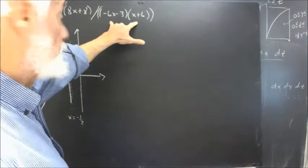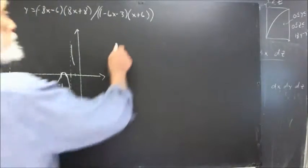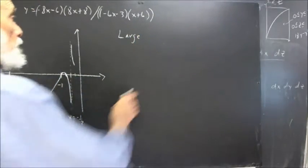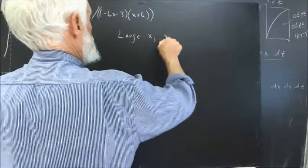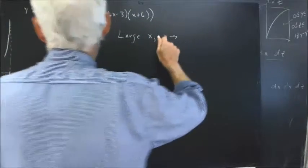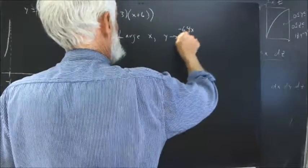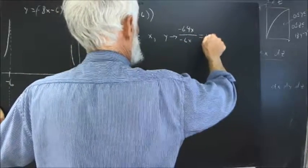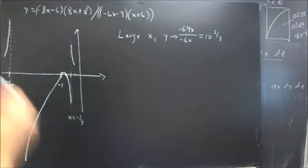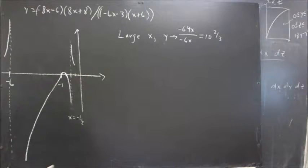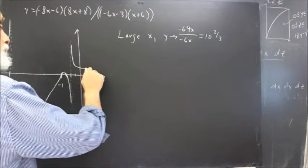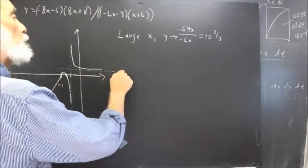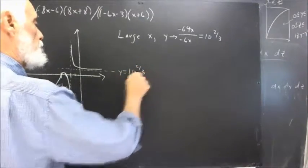In the denominator, we're going to have something close to negative 6x, which means that for large x, y is going to approach negative 64x divided by negative 6x, and that's going to equal 10 and 2 thirds. So what's that going to mean? Now that means that this is going to level off to a horizontal asymptote at y equals 10 and 2 thirds.